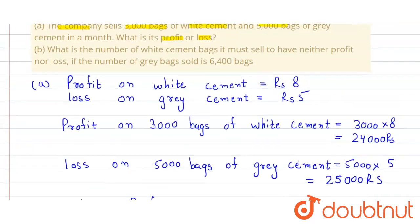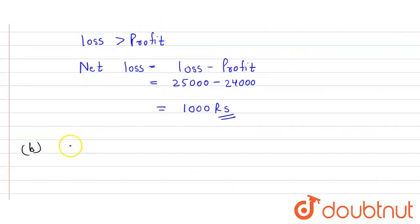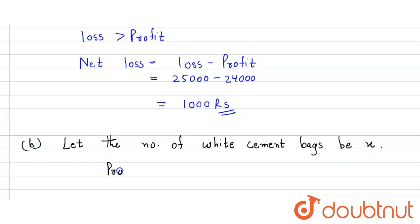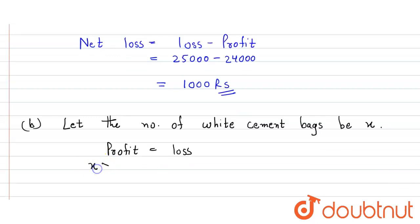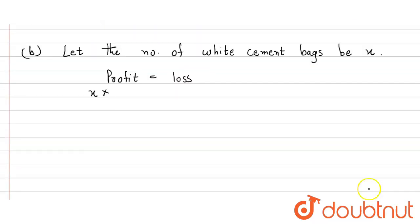In the second part of the question, we have to find the number of bags of white cement that must be sold so that there is no profit and no loss. Let the number of white cement bags sold be x. For no profit no loss, profit must equal loss, so the profit on x bags will be equal to x × 8.